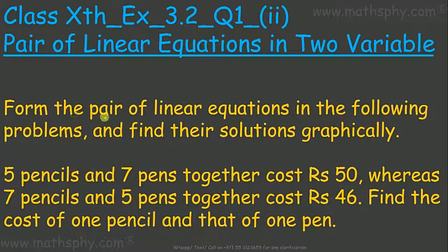This question says: form the pair of linear equations in the following problems and find the solutions graphically. Five pencils and seven pens together cost rupees 50, whereas seven pencils and five pens together cost rupees 46. Find the cost of one pencil and that of one pen.